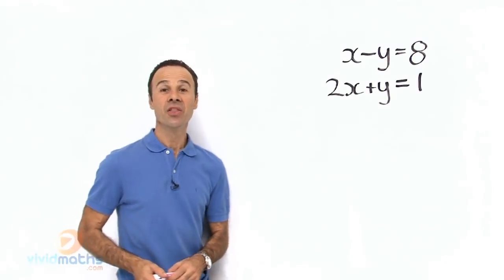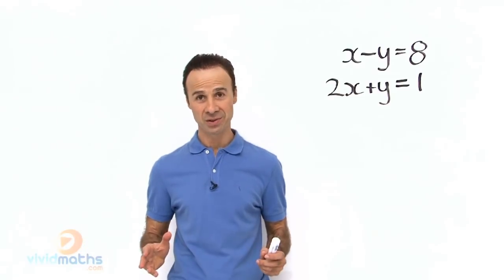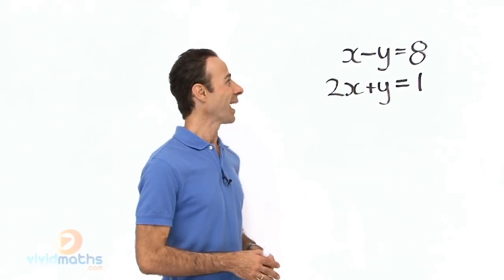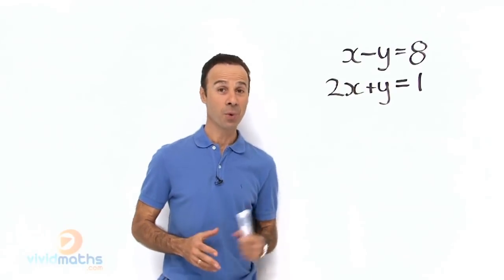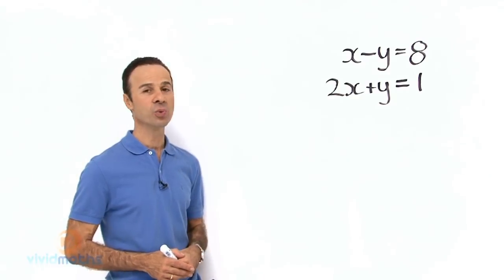Hi guys, we are using the substitution method to solve simultaneous equations. Up here we have an example: x minus y equals 8 and the second one is 2x plus y equals 1.